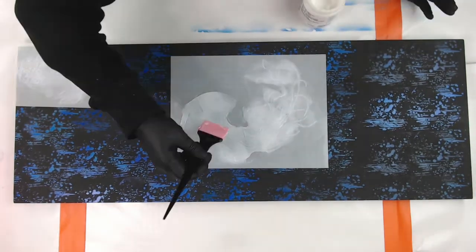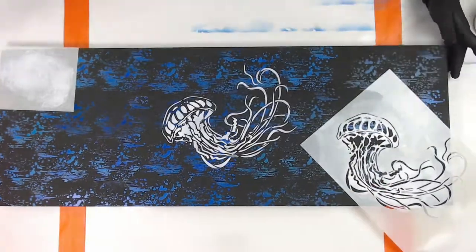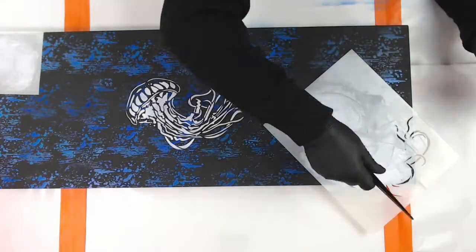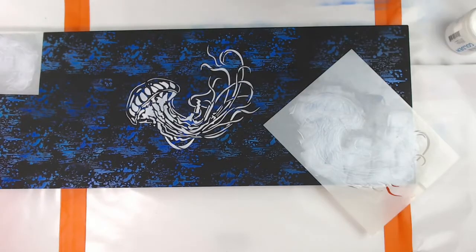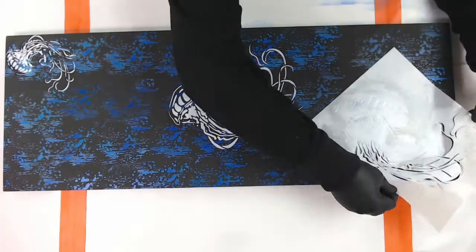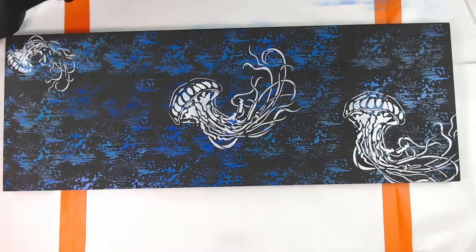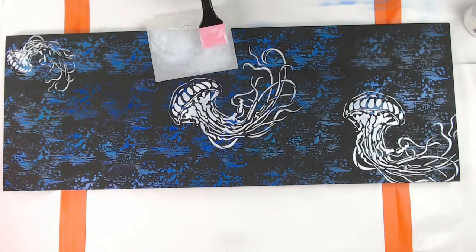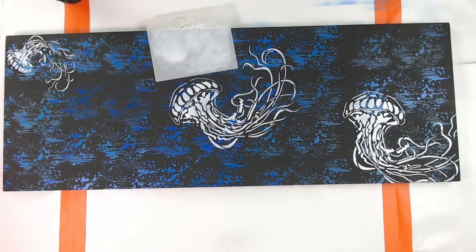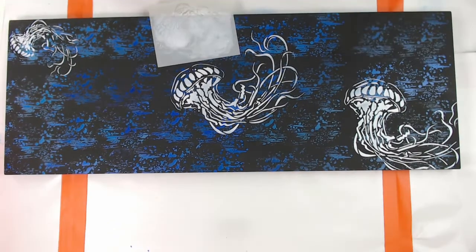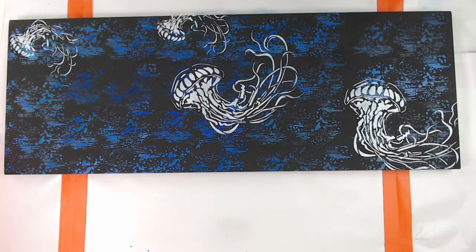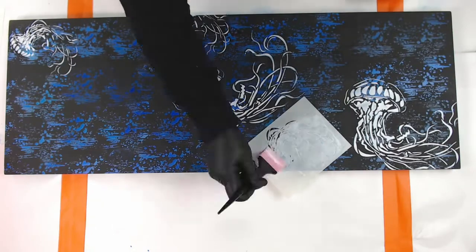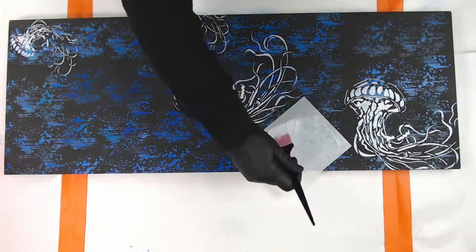This is heavy medium gel for the jellyfish, by Golden. It goes on white but dries clear. I'm also having to do this in layers and let dry 24 to 48 hours, then come back and add more jellyfish.